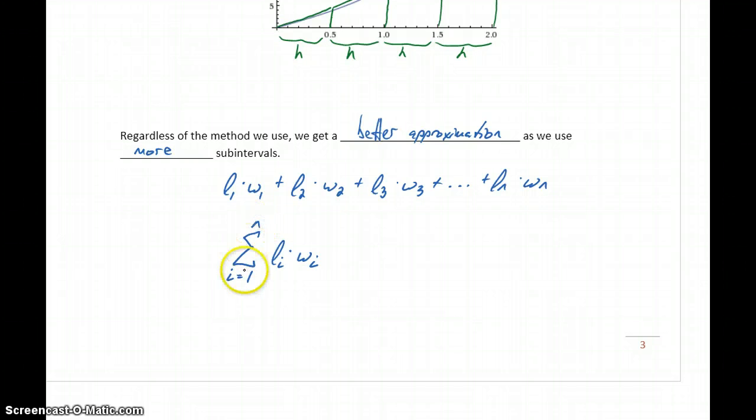If we're using four subintervals, this would be from 1 to n, so we would add length times width four different times. This gives us a more general expression for what we're doing with this adding up all of these different terms.